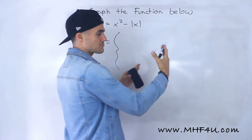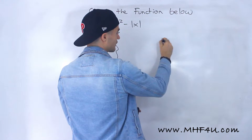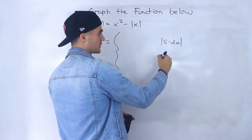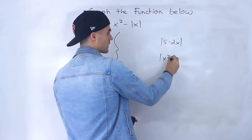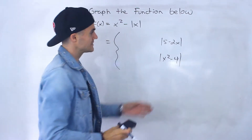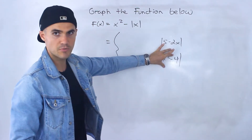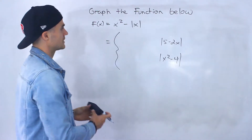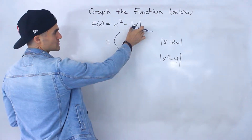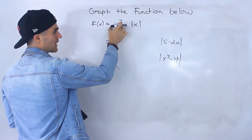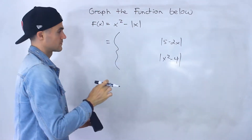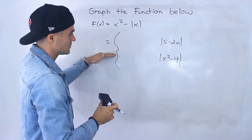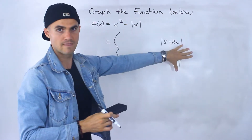Notice that we don't have an expression within the absolute value like the absolute value of 5 minus 2x, as we had in the previous video, or x squared minus 4. So we can't just graph the expression and then flip the negative y values, because this absolute value is sort of isolated and then we have another function to deal with. So what I'm going to do is change it to a piecewise function first and then graph it.